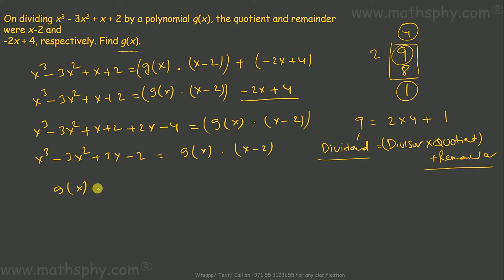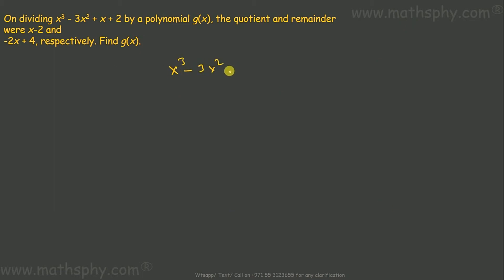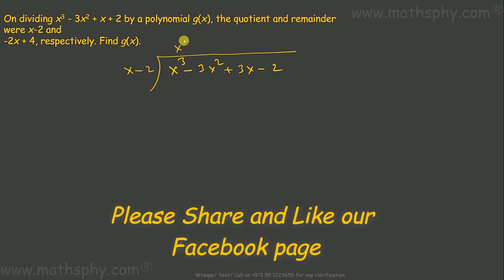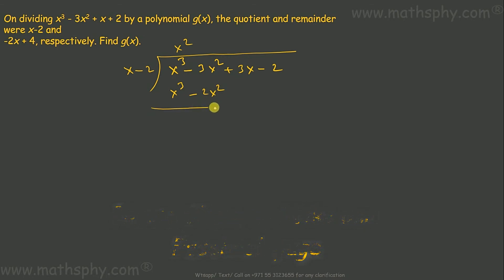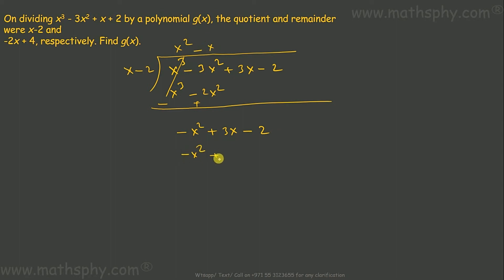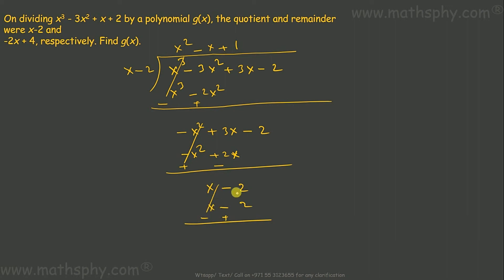So g(x) equals x cubed minus 3x squared plus 3x minus 2 over x minus 2. Now let's divide x cubed minus 3x squared plus 3x minus 2 by x minus 2. This gives x squared, then negative x squared plus 3x minus 2, then x, leaving x minus 2, which cancels. The result is x squared minus x plus 1.